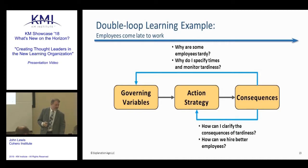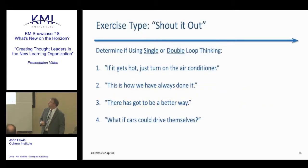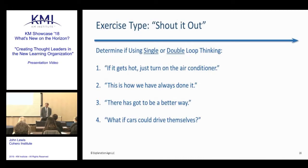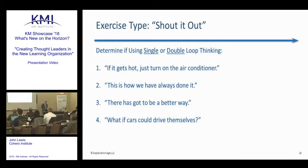Another shout-it-out exercise — single or double loop thinking? 'If it gets hot, just turn on the air conditioner.' Single. 'This is how we have always done it.' Single. 'There has got to be a better way.' Double. 'What if cars could drive themselves?' Double. Good — you get the idea.